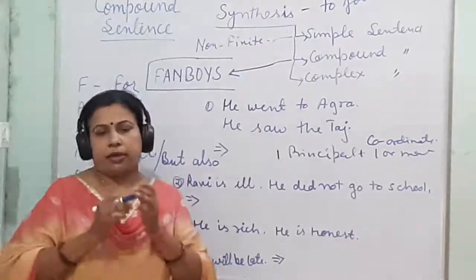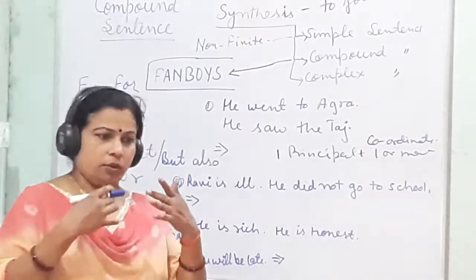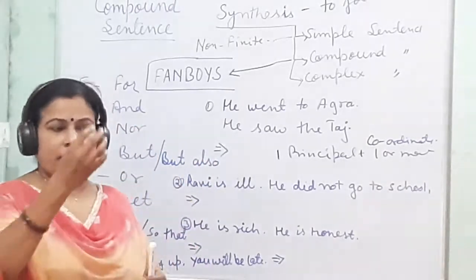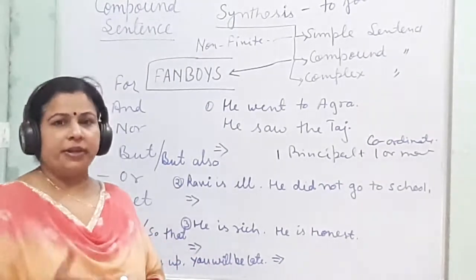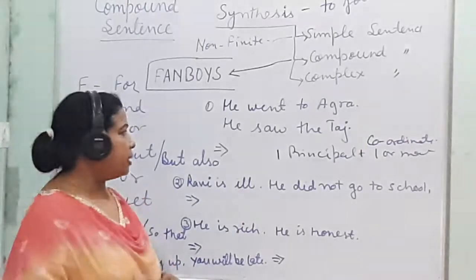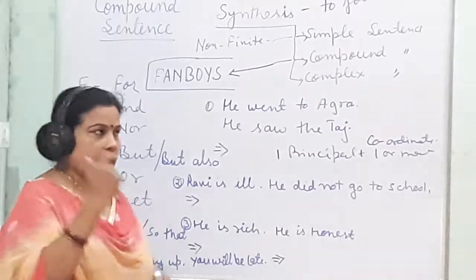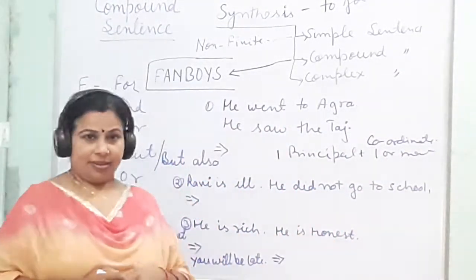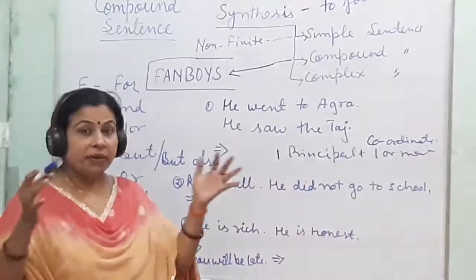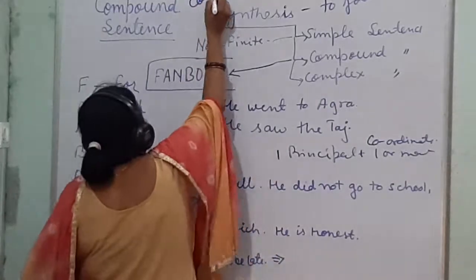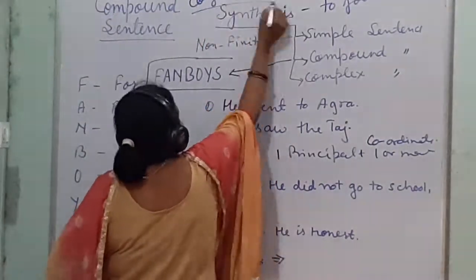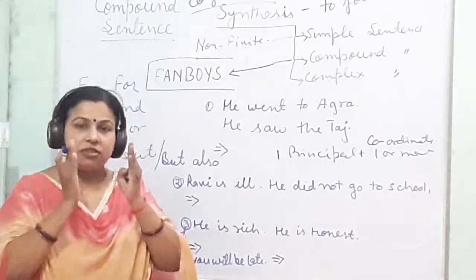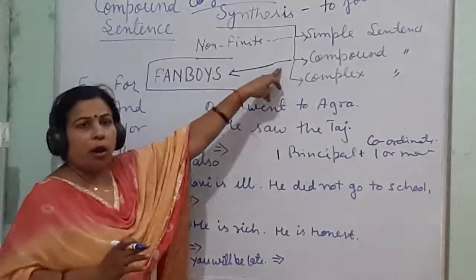Coordinate clause को पहचानने के लिए certain rules and regulations हैं. Principal clause और coordinate clause के बीच में एक conjunction होता है — that is called conjunction. Conjunction से principle clause और coordinate clause एक दूसरे से जुड़े होते हैं. अगर conjunction नहीं रहेगा तो sentence गलत हो जाएगा. Conjunctions play a very dominant role in framing compound and complex sentences. If you put the wrong conjunction, your sentence cannot be framed correctly.